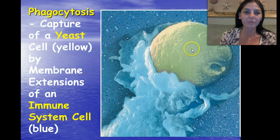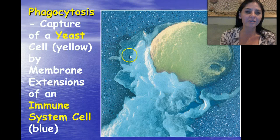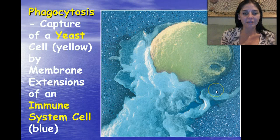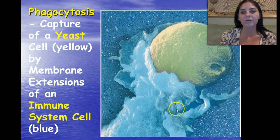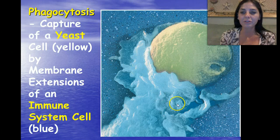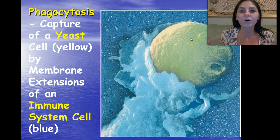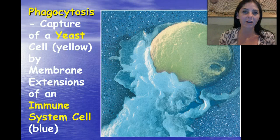This example right here is phagocytosis. You see a yeast cell, which is yellow, being captured by the extensions of an immune system cell. The yeast is an invader, and this immune cell is engulfing it and going to basically dissolve that yeast cell and protect us from it. This concludes our lecture for the different types of transport across the membrane. I'll see you guys next time.